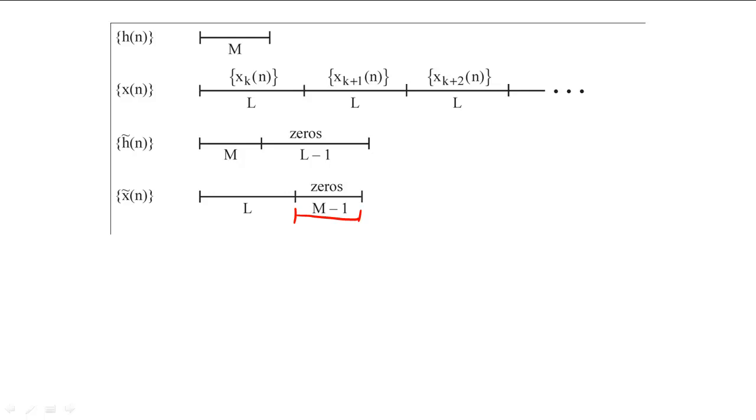After we compute the FFT of our truncated signal, the first L samples of this convolution would match our desired output, but the remaining m minus one samples would not match our desired output.